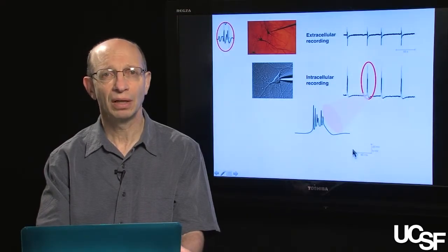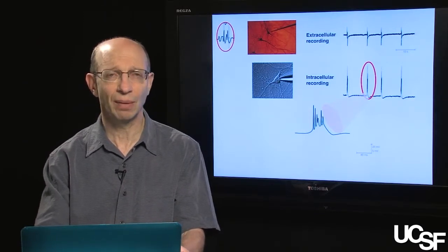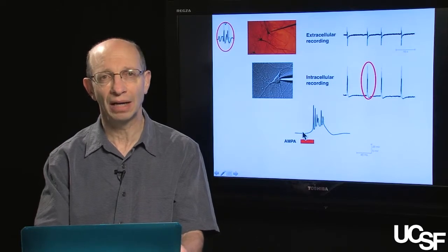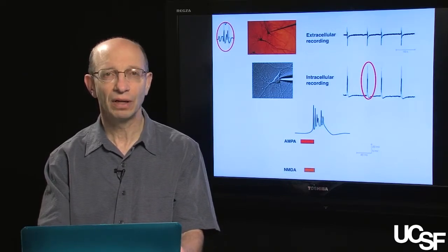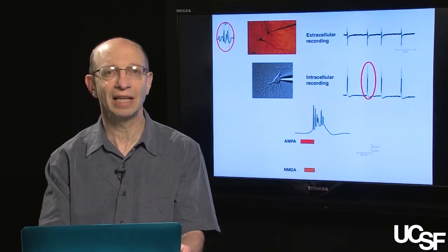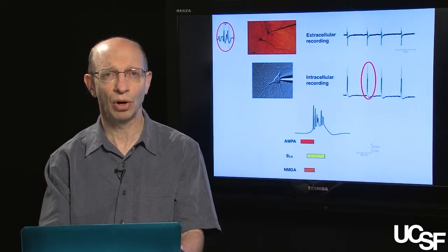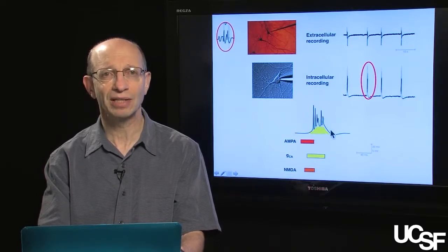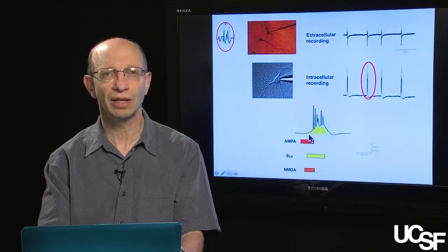By manipulating the experimental preparation, it was possible to begin to dissect apart what the various molecular or ionic contributions are to this type of electrical discharge. The initiation of this activity began with the release of glutamate acting on a postsynaptic AMPA receptor. This leads to the influx of calcium, which then, because of the changes in the depolarization of the cell, unblocks the NMDA receptor, which is also responsive to glutamate.